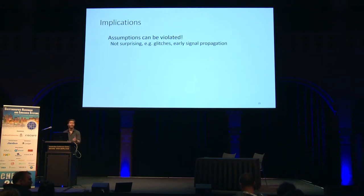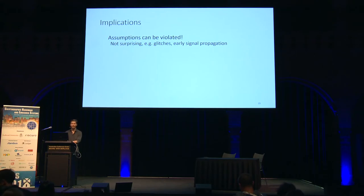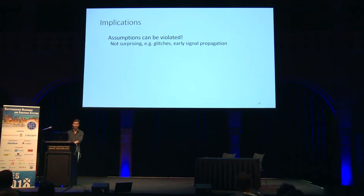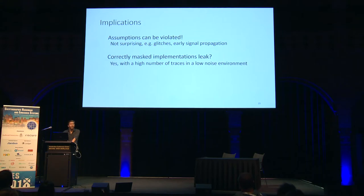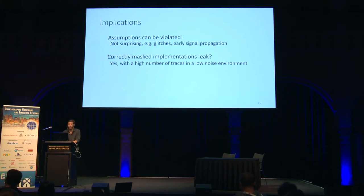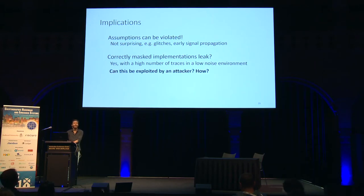For implications: the linear model assumptions can be violated — not surprising in hardware masking literature, as shown by Mangard and co-authors with glitches and early signal propagation. More surprisingly, correctly masked implementations, where real care is taken to translate theory to practice correctly, can still leak. But this is in a lab environment, so the main question for future work is: can this be exploited by an attacker, and if so, how?